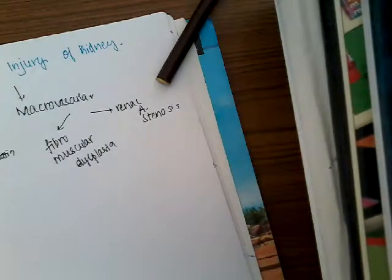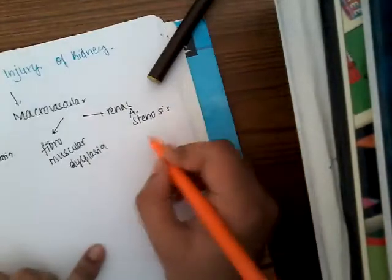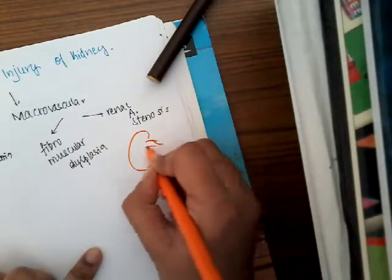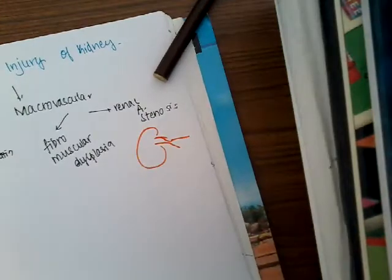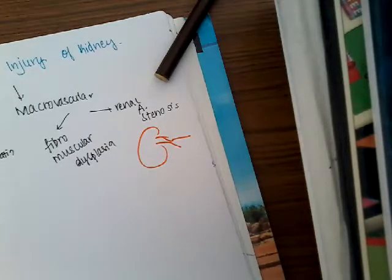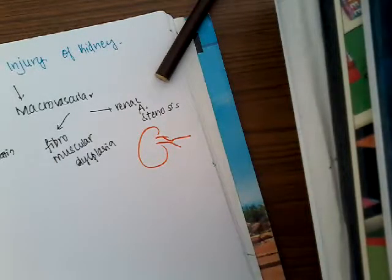Then in renal artery stenosis, there is stenosis to the renal artery. The renal artery which is entering the kidney has been stenosed, and as a result, there is decreased glomerular filtration rate.